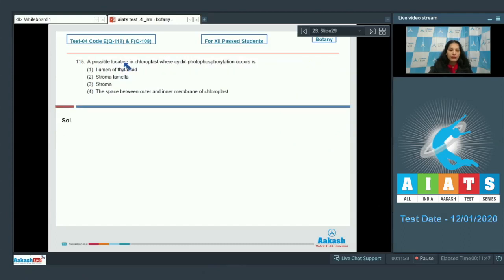Question number 118: A possible location in chloroplast where cyclic photophosphorylation occurs is... Cyclic photophosphorylation occurs on the stroma lamella because PS1 alone is involved in cyclic photophosphorylation and PS1 is present on the stroma lamella. On the thylakoid membranes, both PS1 and PS2 are present, so non-cyclic photophosphorylation takes place. The correct option is option number 2.